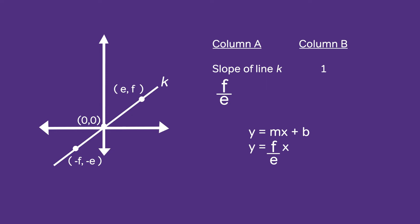That means the coordinates of any point on line k must satisfy the equation. Since the point (-f, -e) lies on the line, its x and y coordinates will satisfy our equation. We'll plug these values into our equation and multiply both sides by e. At this point we can conclude that e² equals f².